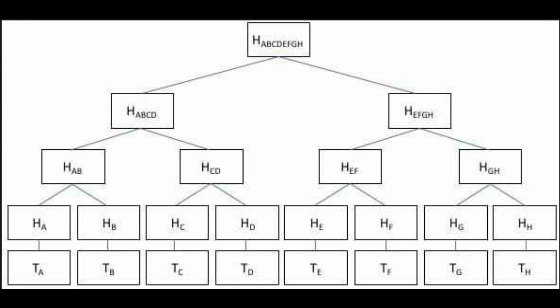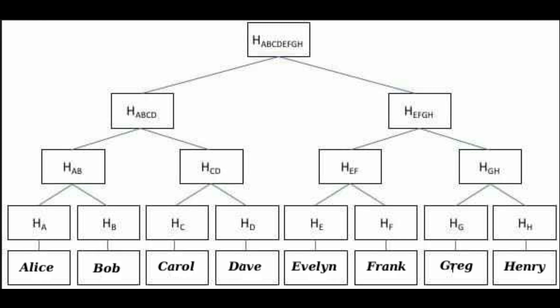Beyond each individual user having their own individual Merkle roots, let's assume that this is all of our users — the site only has eight users right now. We have Alice, Bob, Carol, Dave, Evelyn, Frank, Greg, and Henry. Each one of these users has that root hash, and that root hash is that second level. Alice puts the root hash — hash of Alice — Bob's got hash B, hash C is Carol, hash D is Dave, hash E is Evelyn, hash F is Frank, hash G is Greg, and hash H is Henry.